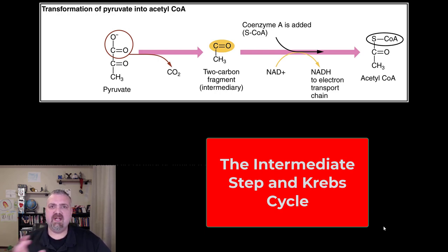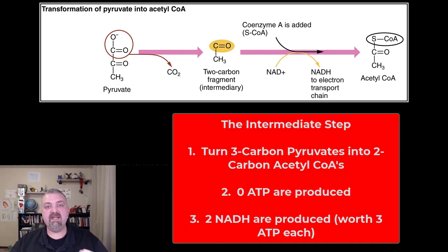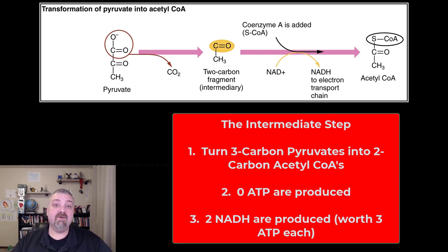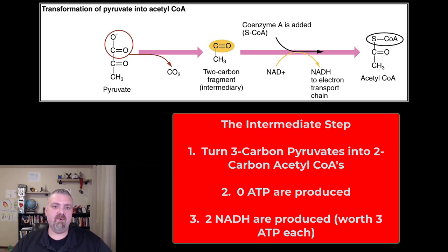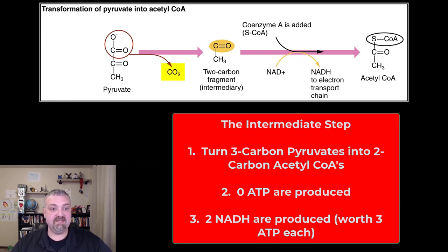This is called the transformation step — I like to call it the intermediate step. This is where you take those two three-carbon pyruvates that were just created from glucose during glycolysis, and you convert them into two two-carbon acetyl-CoAs. If we're going from a three-carbon structure to a two-carbon structure, we're going to lose carbon — this is going to be where our first carbon dioxide is lost.